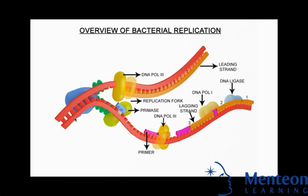The double-stranded structure of DNA provides a simple mechanism for DNA replication. Here, the two strands are separated and then each strand's complementary DNA sequence is recreated by an enzyme called DNA polymerase. This enzyme makes the complementary strand by finding the correct base through complementary base pairing and bonding it onto the original strand.